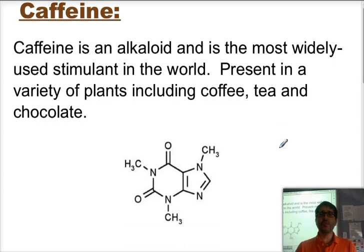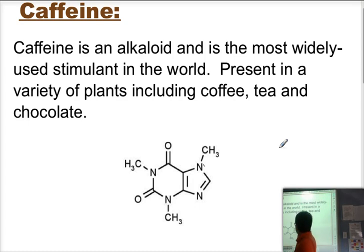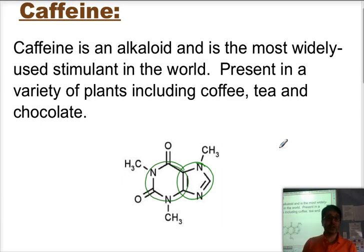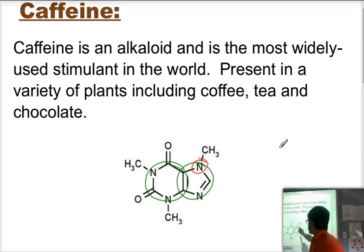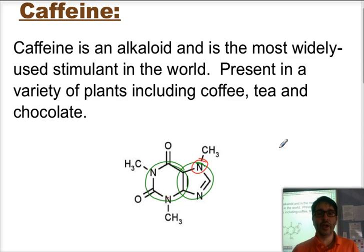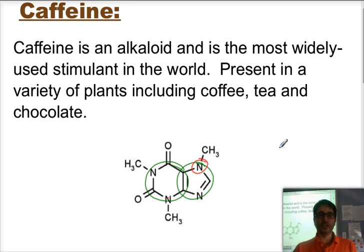Caffeine is another alkaloid and it is the most widely used stimulant in the world. As an alkaloid, it's plant-derived, has a heterocycle — actually two heterocycles — and a tertiary amine. The tertiary amine is in the smaller five-member ring, connected directly to three other carbons. Caffeine is present in many different plants including coffee, tea, and chocolate. One of the easiest sources to extract from is coffee, even though the tea plant contains higher concentrations — it's more difficult to extract, which is why the most common way to consume it is to drink coffee.